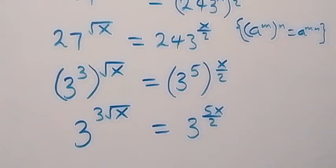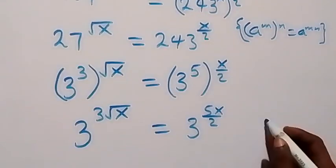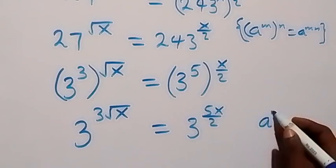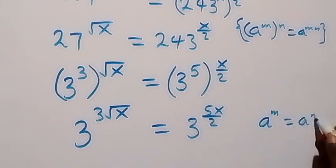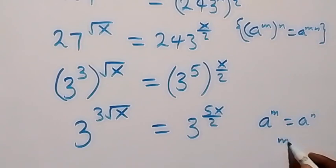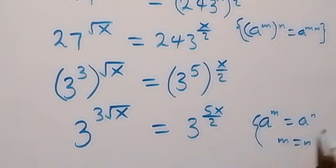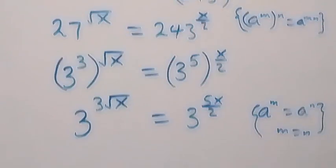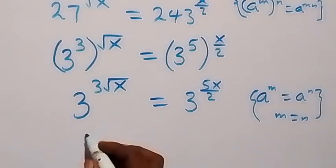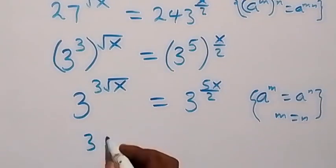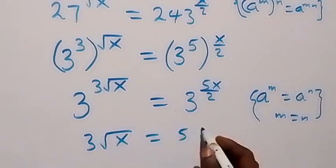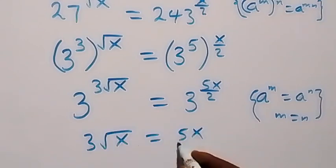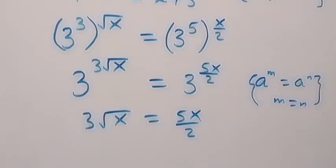And from the law of indices, when both sides have the same base — like a raised to power m equals a raised to power n — we can say m equals n. So from here, we have 3 root x now equals to 5x over 2.